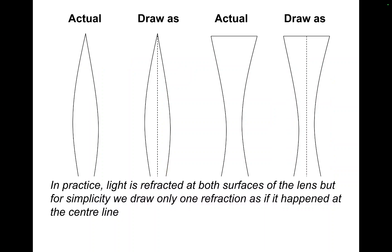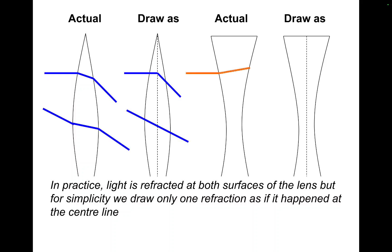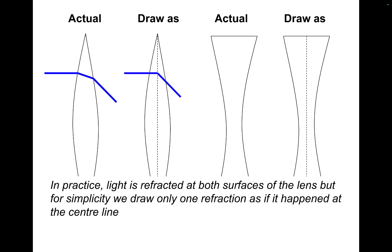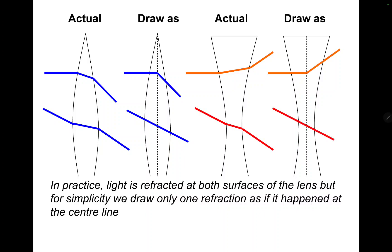So what happens as light passes through a lens? In practice, light is refracted at both surfaces of the lens, but for simplicity we just draw one refraction. Actually, you get double refraction because there are two different surfaces, but we draw it as a single refraction that occurs straight in the centre of the lens. If you draw your concave or convex lens as a straight line with arrows as shown, then this is simplified again.